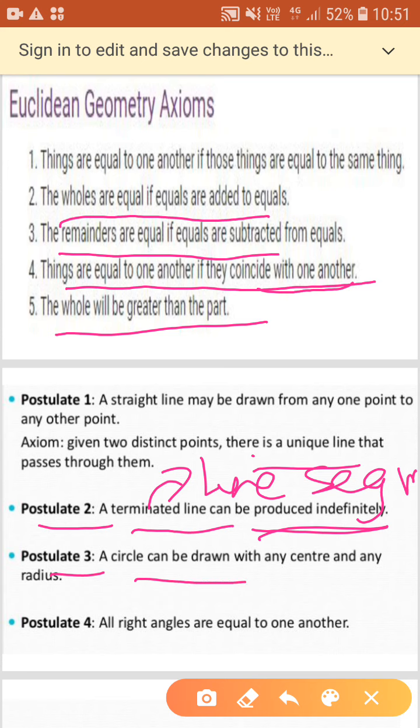Postulate three, it states that a circle can be drawn with any center and any radius. So it is very obvious with the definition of a circle, that circle is a collection of points which are at a fixed distance from a fixed point. This fixed point is called the center and the fixed distance is called the radius. So these are very obvious definitions.